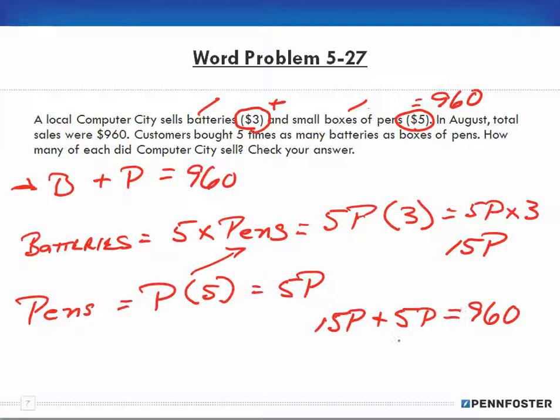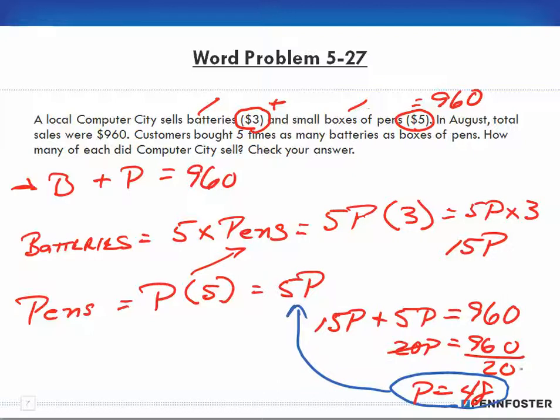They total $960, so now we just do the math. 15P plus 5P is 20P equals 960. When we divide both sides by 20, P ends up being 48. Now we have to take P equals 48 and plug it back into the number of pens and also plug it back into the number of batteries.